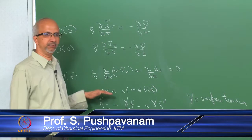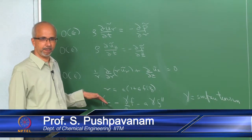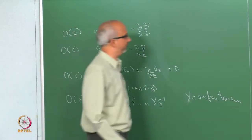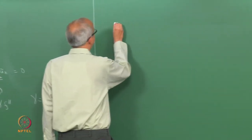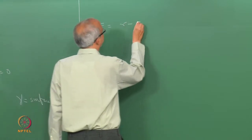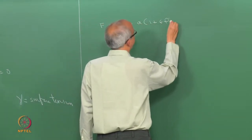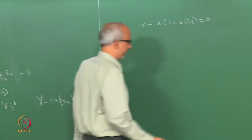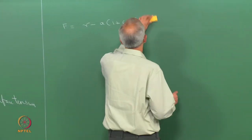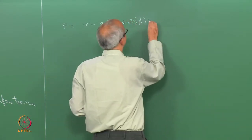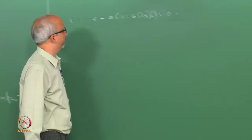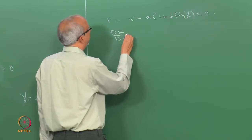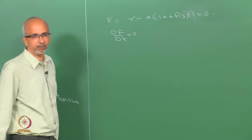In addition to all of this, we need to use the kinematic boundary condition. We have to derive the kinematic boundary condition for this particular problem. We write the interface F as R minus A times (1 plus epsilon·f(z)) = 0, where F is also a function of time. The kinematic boundary condition is DF/Dt = 0.